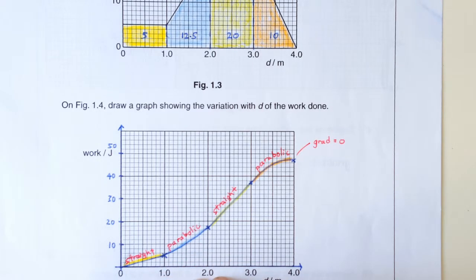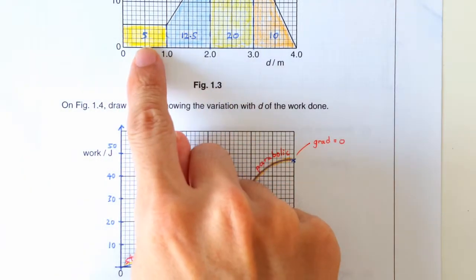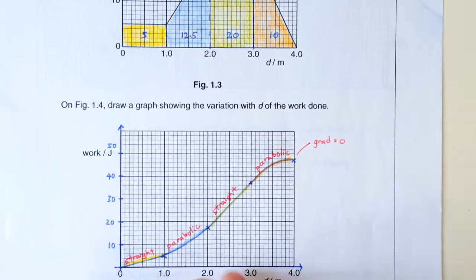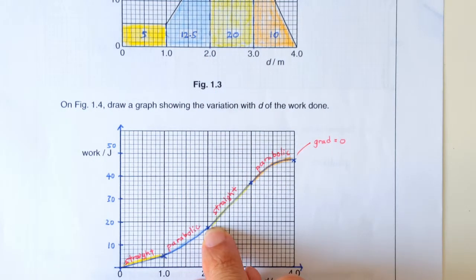At distance of 2 meters, the total work done would be 5 plus 12.5, 17.5. So we get another data point here.